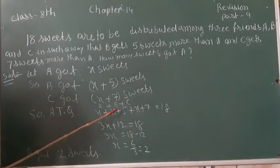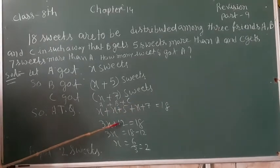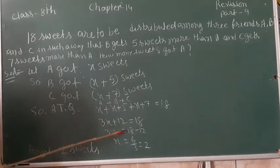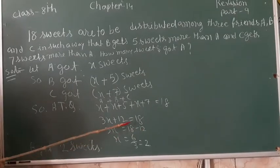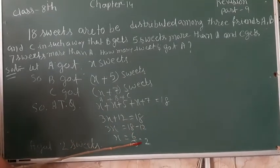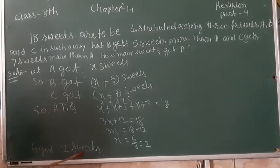So 3x, x, x and x, 3x plus 12 is equal to 18. 3x is equal to 18 minus 12. X is equal to 6 by 3, equal to 2. So A got 2 sweets.